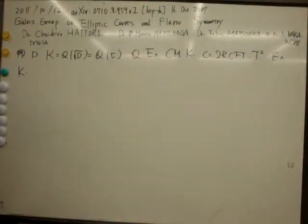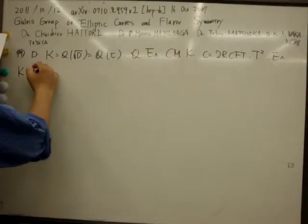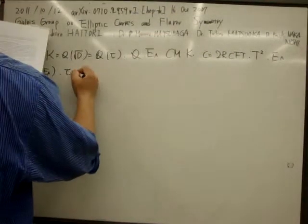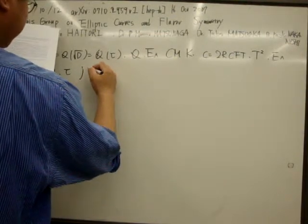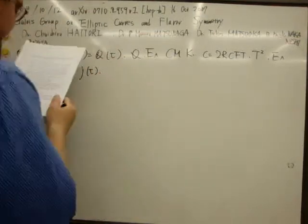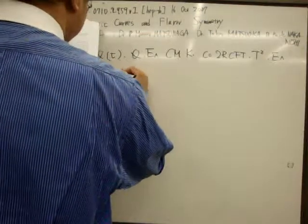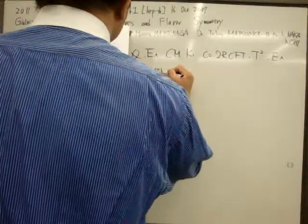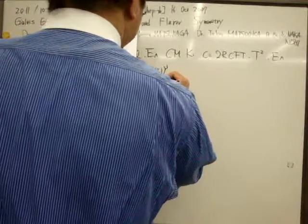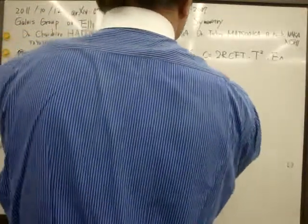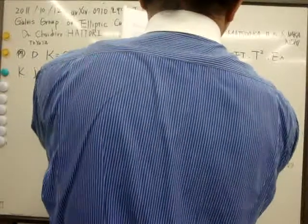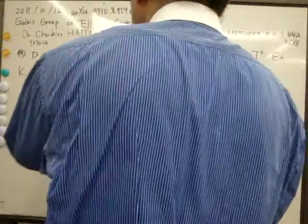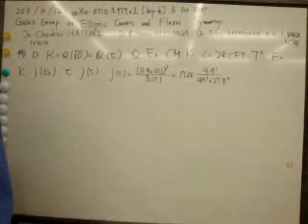The J-invariance J E Lambda depends only upon tau and also the denominator J tau. The J-invariance J tau is equal to tau cubed and delta tau equal to G2 cubed divided by 1728 delta equals G2 cubed plus 27 G3 squared.